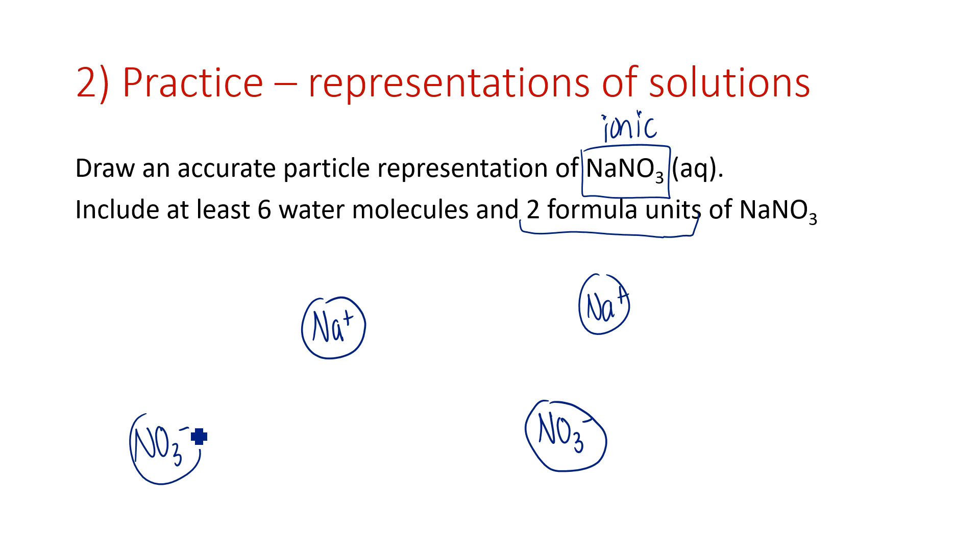That means two sodiums and two nitrates. We use the word formula unit rather than molecule. If we have molecular covalent bonding, we refer to them as molecules. If we have ionic bonding, we refer to them as formula units. We cannot use the word molecule with something that's ionic because there's no such thing as a molecule if you're an ionic compound.